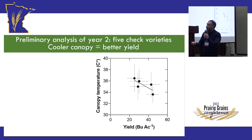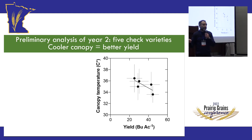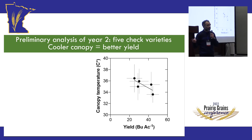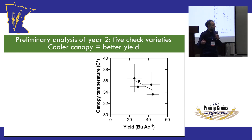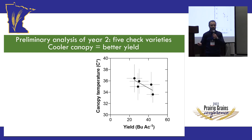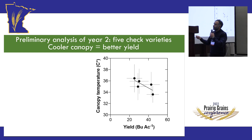This year's data is still being analyzed — that's the bottleneck for us. We have terabytes of data, which takes significant time. Technology is useful but you still need brains, people to code, and humans to do data analysis. The same relationship holds for the check cultivars in this year's data, which is also promising.